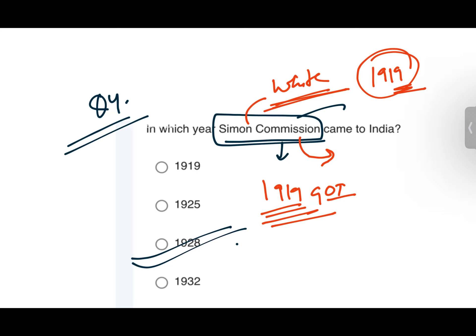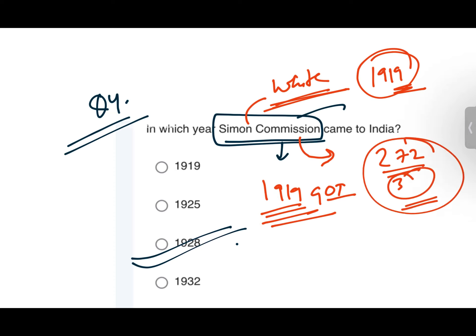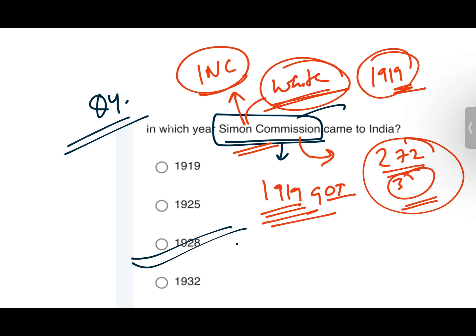Because of the 1919 Jallianwala Bagh massacre, people were brutally killed. General Dyer shot the crowd. Some people jumped into wells, many were killed. British newspapers showed only around 200–300 deaths. When Indians demanded a commission to investigate whose fault it was, the Simon Commission was set up — called the White Commission because there was no Indian representation. The Indian National Congress fully boycotted the Simon Commission when it came to India in 1928.